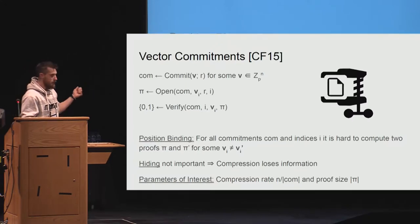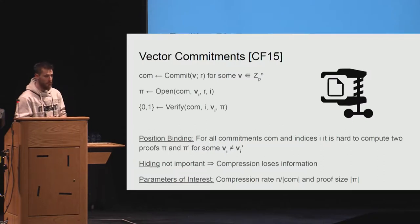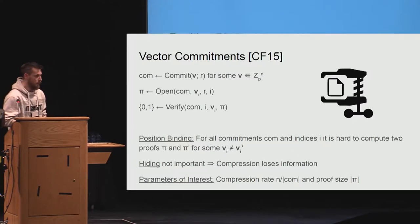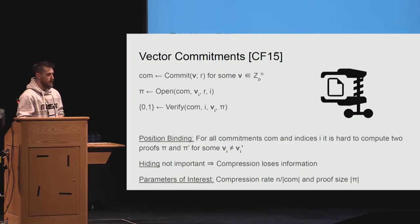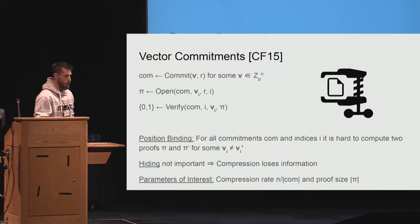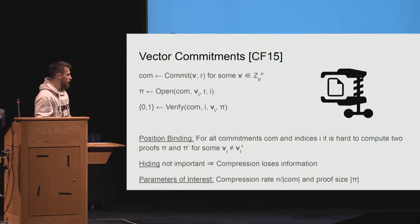The only property that we want from a vector commitment is position binding, which means essentially that you cannot prove that a certain position opens to two different values. Hiding is not really important because the commitment is compressing, so it just loses information, and anyway it can be achieved through a generic transformation. The compression rate throughout this work is going to be perfect, just like a Merkle tree.